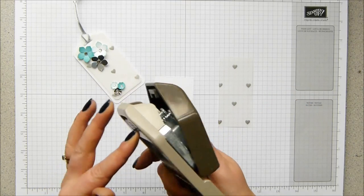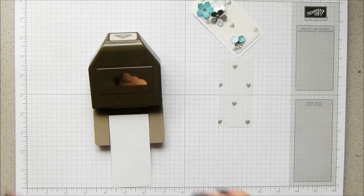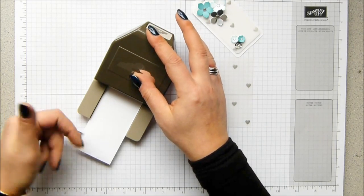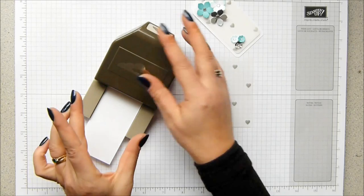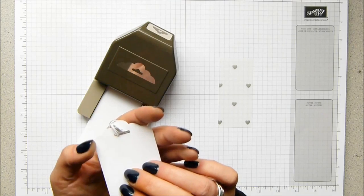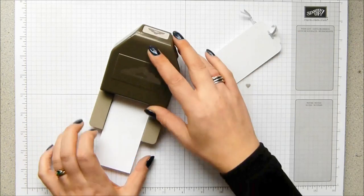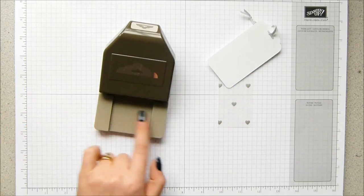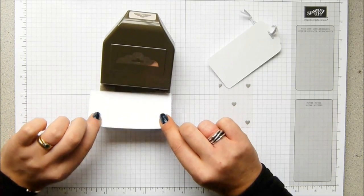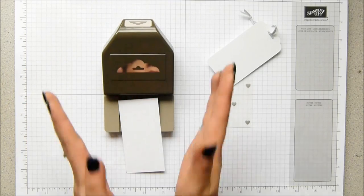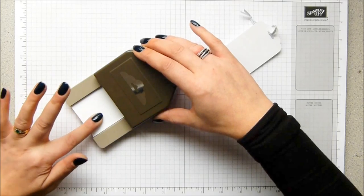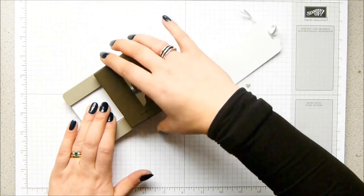You need your scallop tag topper punch. Your length can be anything you like with the tag topper because there's no bottom to it. But your width, if you're going to want these beautifully smooth rounded edges, can be no more than two inches, which is five centimeters. You slide your card in as far as it will go and you'll meet some resistance and you punch down. That's all you do.